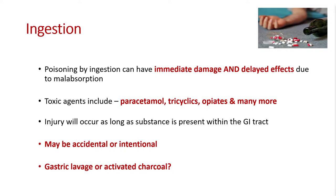When drugs are ingested via the GI tract, this can have immediate and delayed effects depending on absorption. Key drugs to think about include paracetamol, tricyclics, and opiates. Injury will continue as long as the substance is present in the GI tract. This is where we start to talk about things like gastric lavage or activated charcoal. Activated charcoal — particularly for paracetamol overdose — is much debated, but if given within the right time frame it can be effective as it adsorbs the agent before it's properly absorbed.